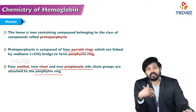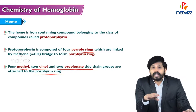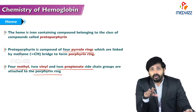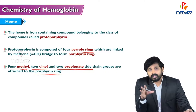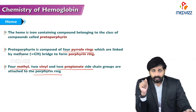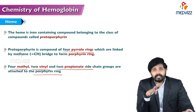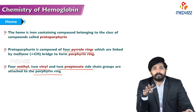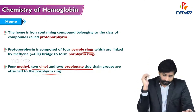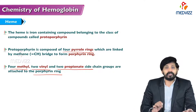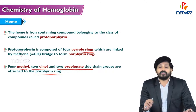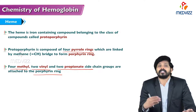Protoporphyrin is composed of four pyrrole rings which are linked by methane bridges. When these four pyrrole rings are joined by methane bridges, it gives a structure called porphyrin. This porphyrin ring contains four methyl groups, two vinyl groups, and two propionate groups attached to its side chains.